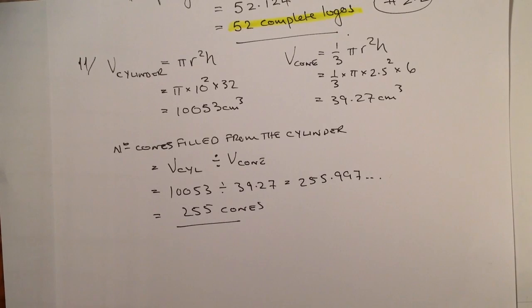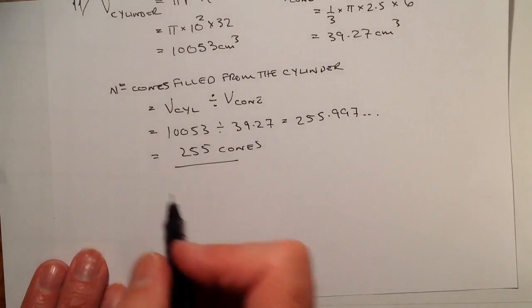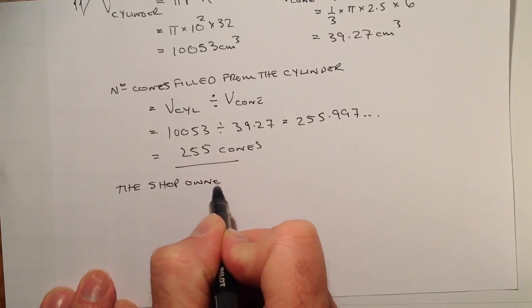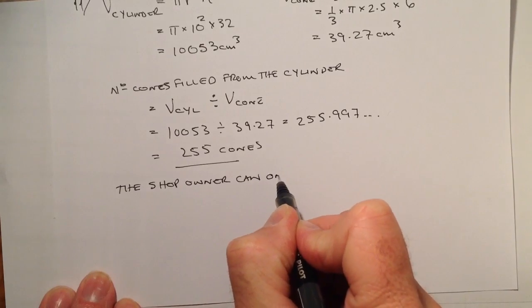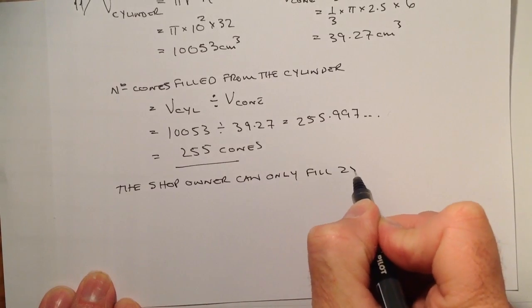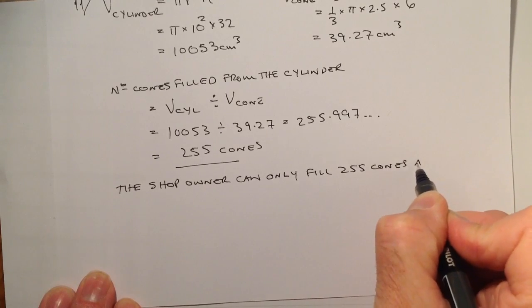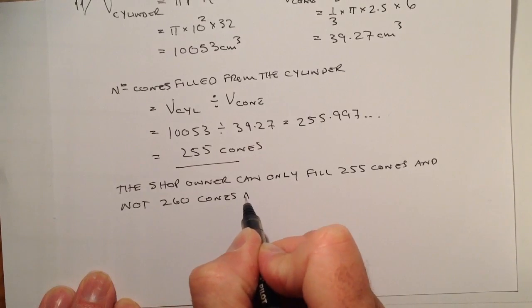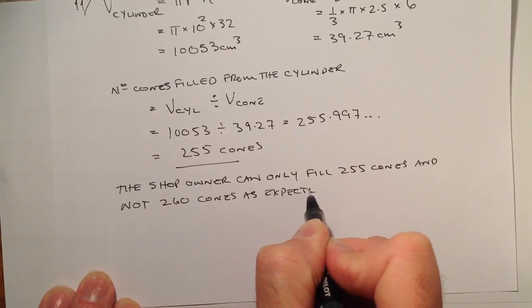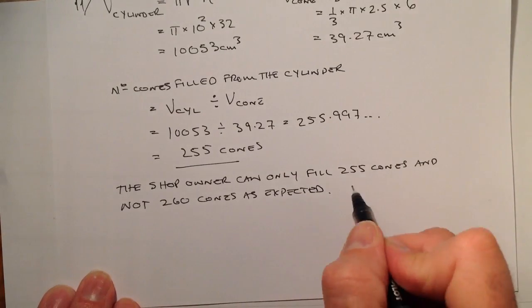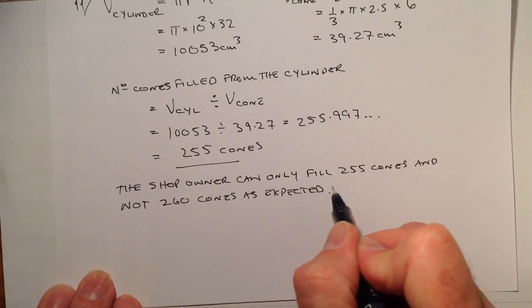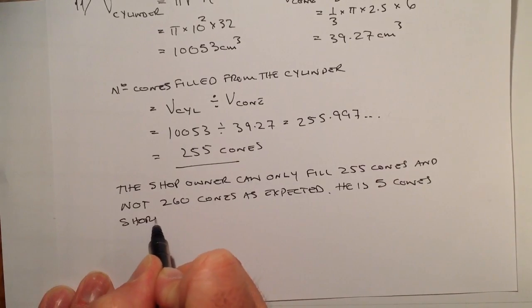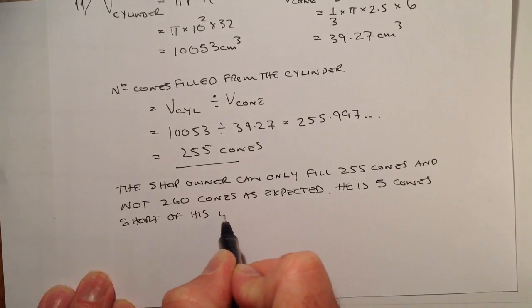From that result I can make a statement: the shop owner can only fill 255 cones and not 260 cones as expected. He is five cones short of his expectation.